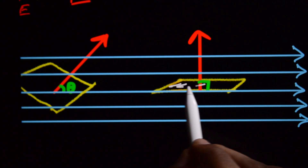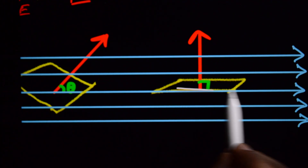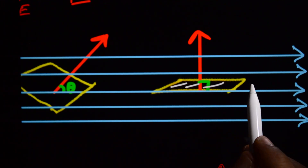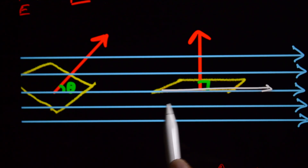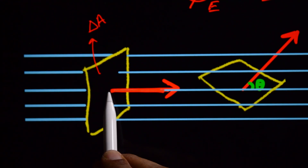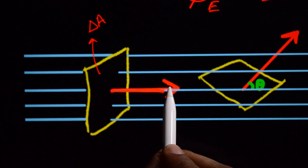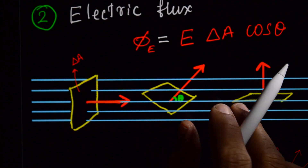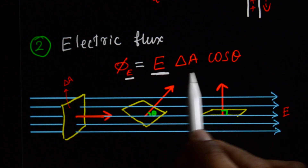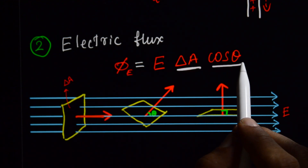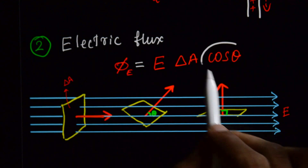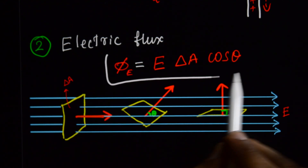The number of lines passing through this area is reduced and the amount of water flowing through this area is reduced. When the area vector is perpendicular to the flow of water — that is, 90 degrees — the amount of water flowing through the frame is zero. When the angle between flow of water and area vector is zero, flux is maximum.